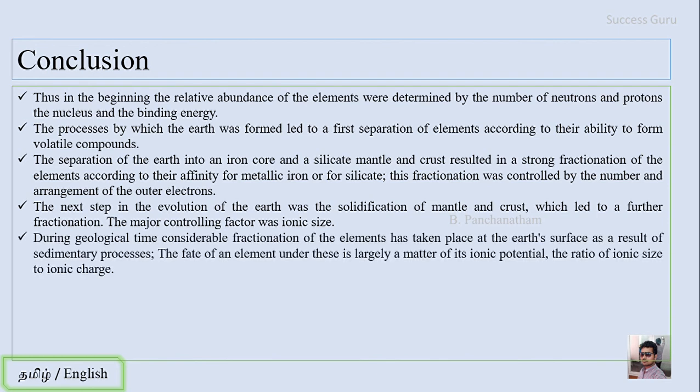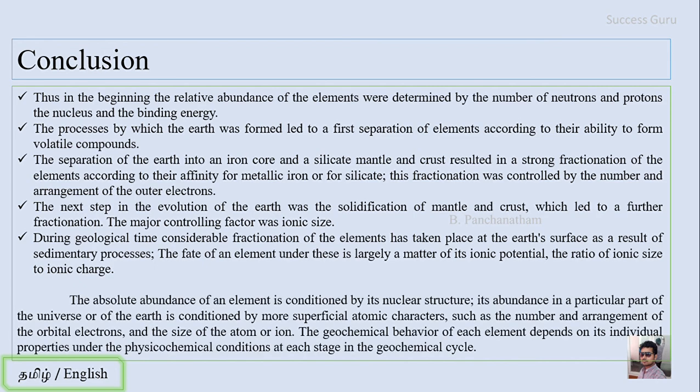During geological time, considerable fractionation of the elements has taken place at the earth's surface as a result of sedimentary processes. The fate of an element under this is largely a matter of its ionic potential, the ratio of the ionic size to the ionic charge. The absolute abundance of the element is conditioned by its nuclear structure. Its abundance in a particular part of the universe or the earth is conditioned by more superficial atomic characteristics such as the number, arrangement of the orbital electrons, and the size of the atom or ion. The geochemical behavior of earth elements depends on its individual properties under physicochemical conditions at each stage in the geochemical cycle.